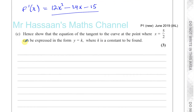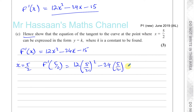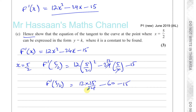Part C says: hence, using what we just found, show that the equation of the tangent to the curve at x equals 5 over 2 can be expressed in the form y equals k. The gradient function tells us the gradient at any point. When x equals 5 over 2, the gradient is 12 times 5 over 2 squared minus 24 times 5 over 2 minus 15. That gives 12 times 25 over 4, with the 4 and 12 cancelling to give 3, so 75 minus 60 minus 15, which equals 0.